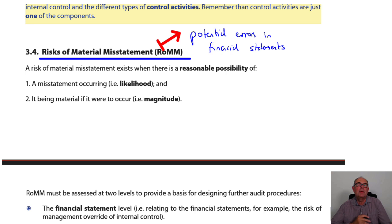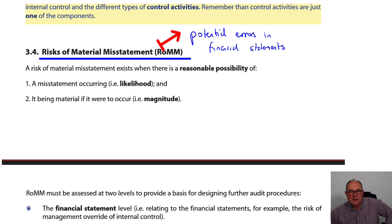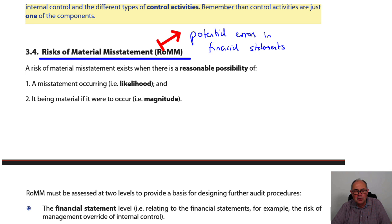Every day the auditor says: today I'm off to audit, looking at the statement of financial position and the profit and loss to see if any of the numbers are materially wrong. That is their life — looking for things that are wrong in the statement of financial position, the profit and loss, and all the related notes.